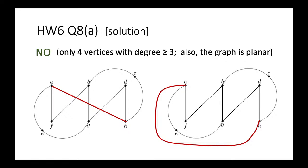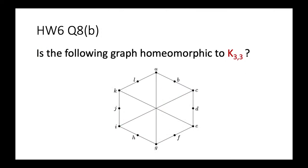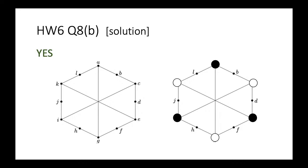Now for the second part: we want to find out whether another graph is homeomorphic to K3,3. The answer here is yes. We think of three vertices as black vertices and three as white vertices, then we perform smoothing on all remaining degree-two vertices. After smoothing, each black vertex is joined to the white vertices. The chains disappear and become single edges, so after smoothing this graph becomes K3,3. Therefore it is a homeomorphic graph of K3,3. This is question 8b.